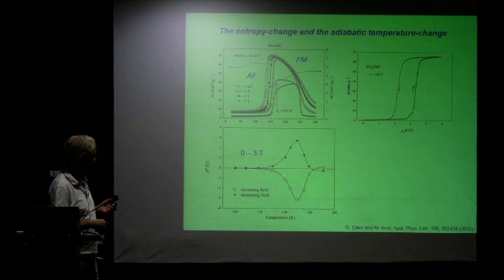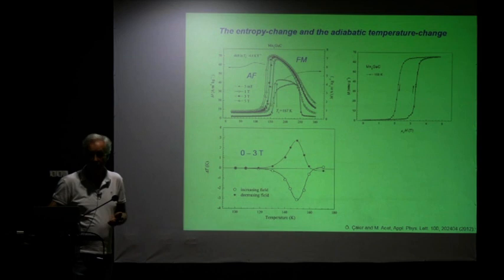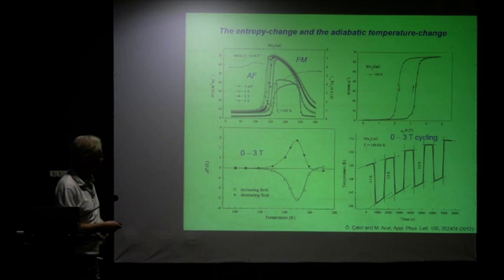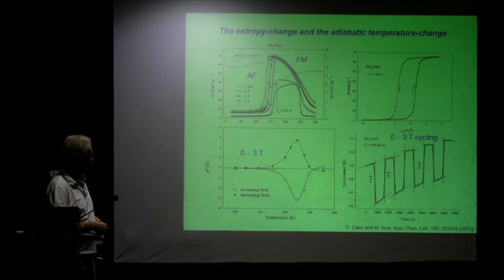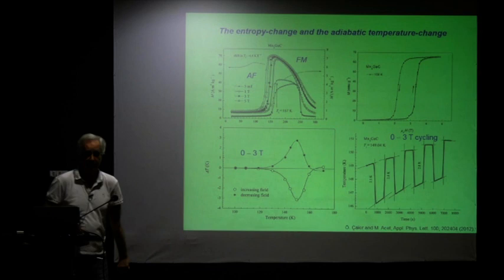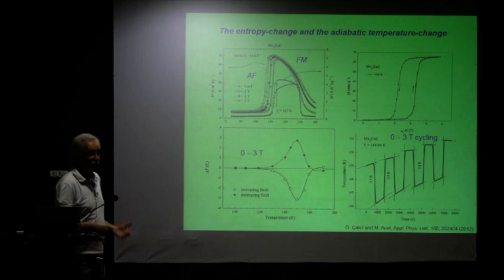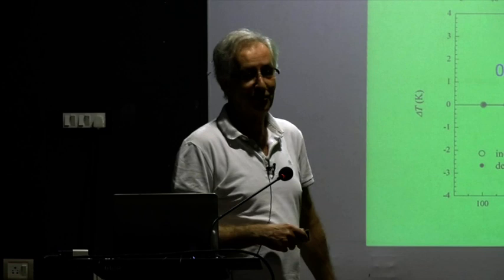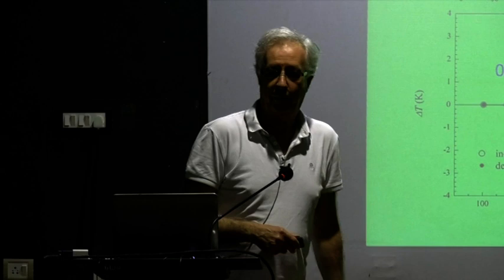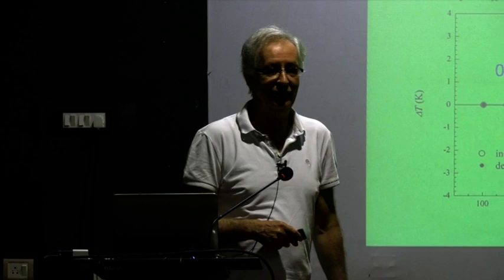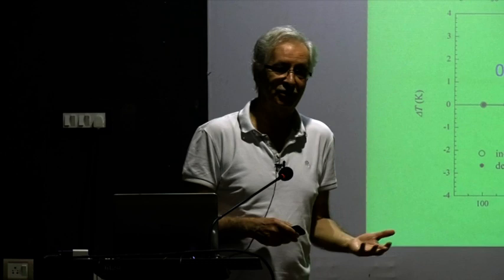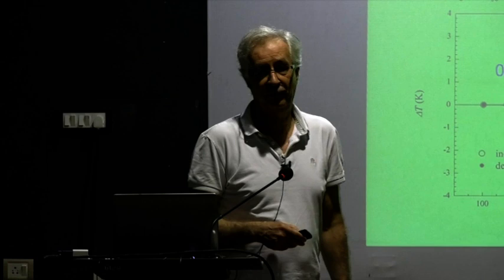Increasing and decreasing the field gives you pretty much the same temperature change — quite reversible. If we do the repetition of cyclic field change experiment as for the Heuslers, we get a step-like feature. The initial shot is 3.1 K and subsequent shots are 2.8 K — not bad at all. This would be an ideal system to use if the transition temperature were at room temperature for room temperature cooling. But it's still a good system for low temperature applications like space, blood preservation, tissue preservation, or refrigeration in that range.